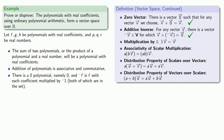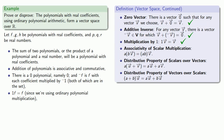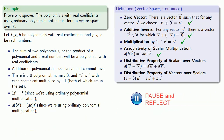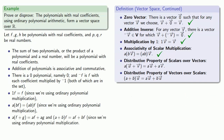Multiplication by the scalar 1: 1 times f gives us f, because we're using ordinary polynomial multiplication. Associativity of scalar multiplication: a times (b times f) is the same as (ab) times f, which again follows from ordinary polynomial multiplication. We also have our two forms of the distributive property: a(f + g) = af + ag, and (a + b)f = af + bf. This is true because we're using ordinary polynomial multiplication. So this set does in fact form a vector space.